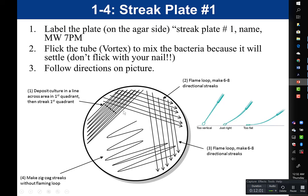Once you put your bacteria on the first quadrant, remember the goal is to get less bacteria in each quadrant. To achieve this, flame your loop and let it cool. While it cools, rotate your plate 90 degrees so that quadrant one is now to the side, and then after your loop has cooled, you can do your 6 to 8 directional streaks.